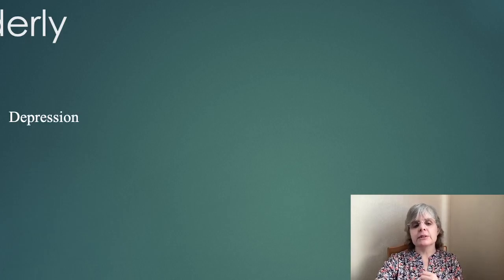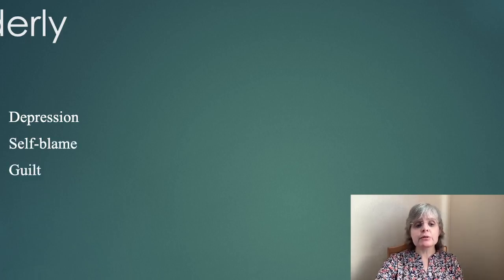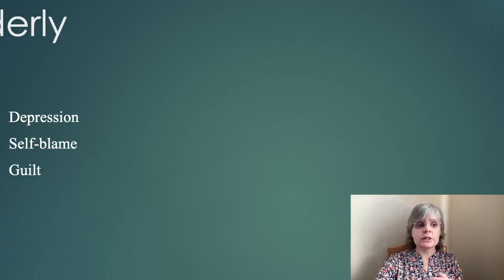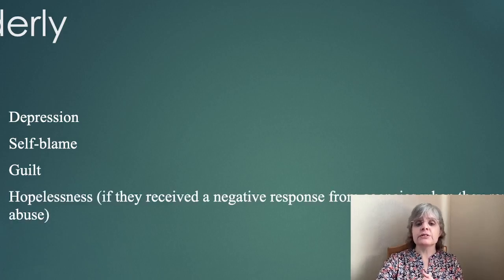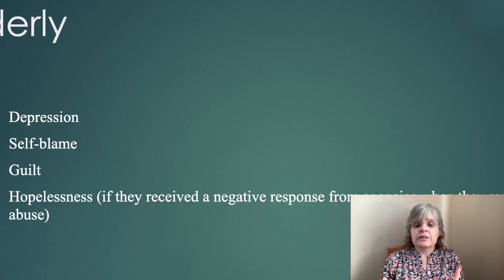Depression, hopelessness, sorrow — because of the situation they're in and the way their life is ending. They blame themselves for what they're going through: guilt, self-blame. 'I am in the wrong. It's my fault because of the way I'm being treated.' Hopelessness: if they've tried to bring change, if they've reported the abuse and nothing has happened, they could sense that nothing's going to change — this is the way it's going to be for the rest of my life.